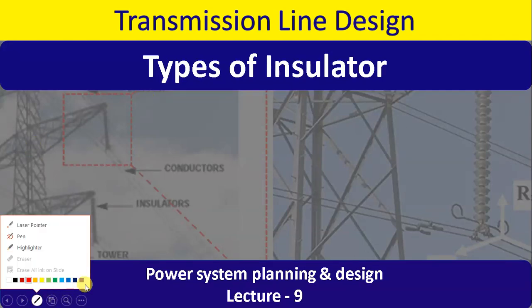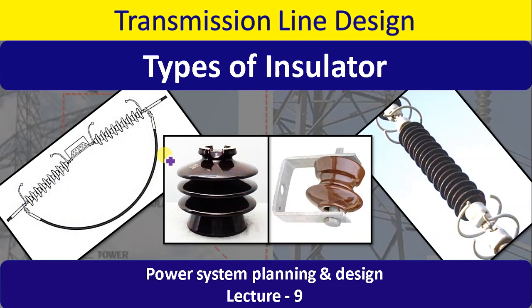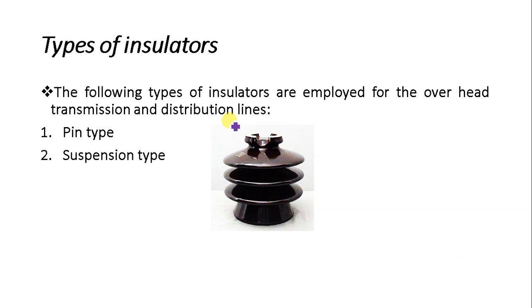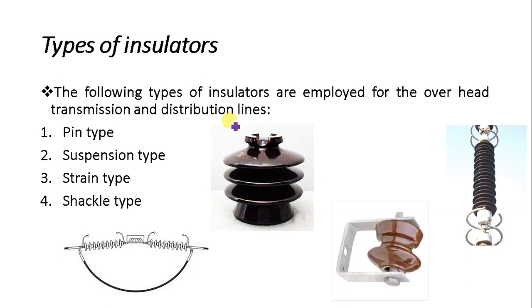Namaskar students, welcome again to Essential Electricals. In today's lecture we are going to discuss different types of insulators. In the previous lecture we discussed what an insulator is and the different properties an insulator should possess. There are four different kinds of insulators generally used in transmission or distribution lines: pin type, suspension type, strain type, and shackle type. We will discuss how these insulators are designed, at which voltage level each is used, and what the special application of every insulator is.